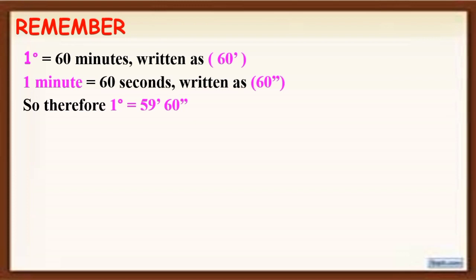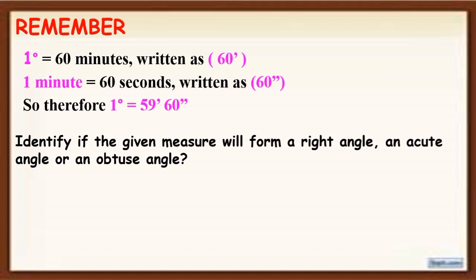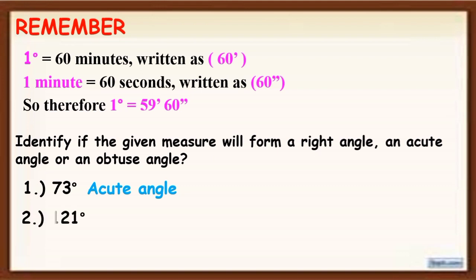For example, we are going to identify whether the given measure forms a right, acute, or obtuse angle. For 73 degrees — the answer is acute angle, because the measure is less than 90 degrees. For 121 degrees — the answer is obtuse angle, because it is greater than 90 degrees.